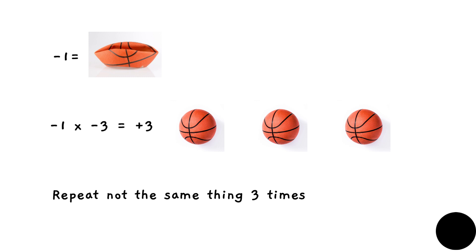So what's the opposite of a deflated ball? It's a ball full of air. So you have a minus one deflated ball, but you repeat the opposite of that ball three times. What do you get? You get three inflated balls. And what are these three inflated balls? Plus three. That's why minus and minus leads to plus.